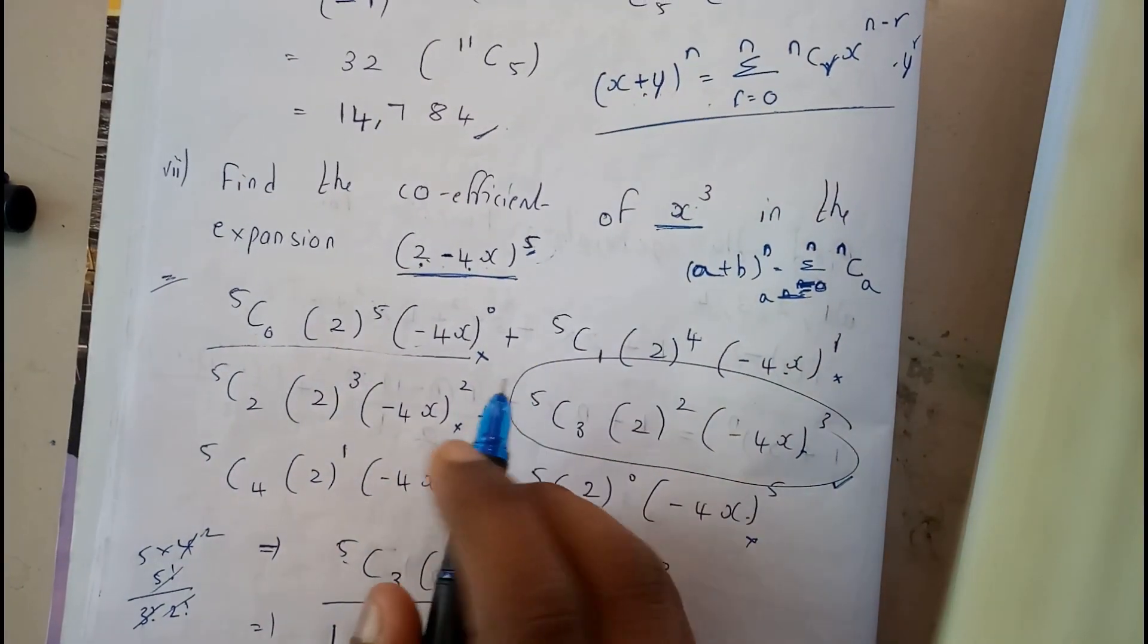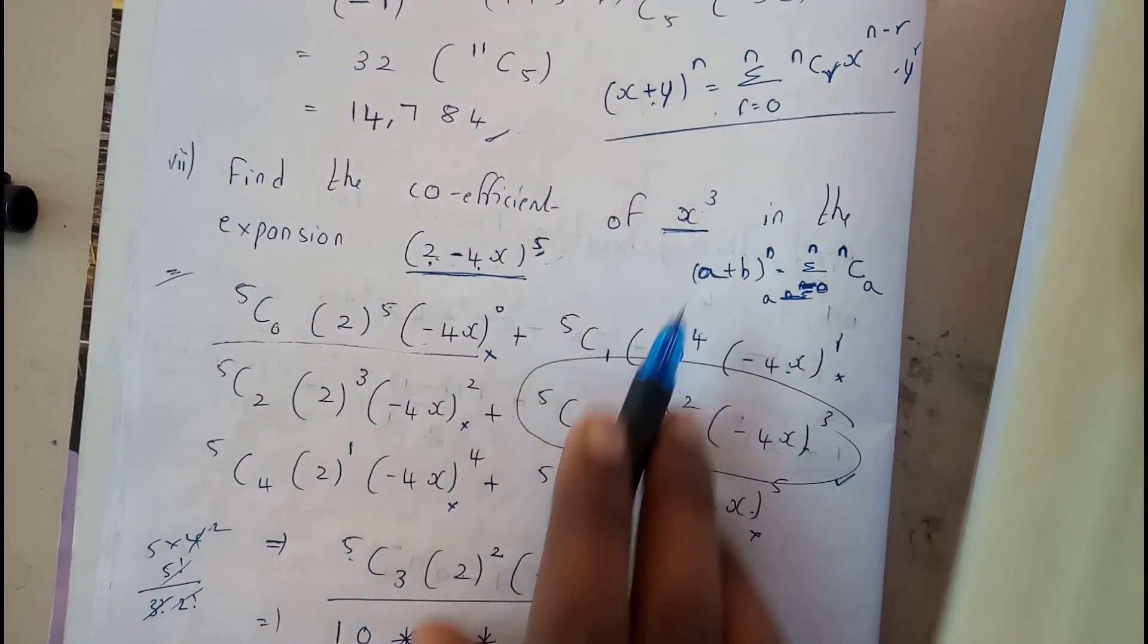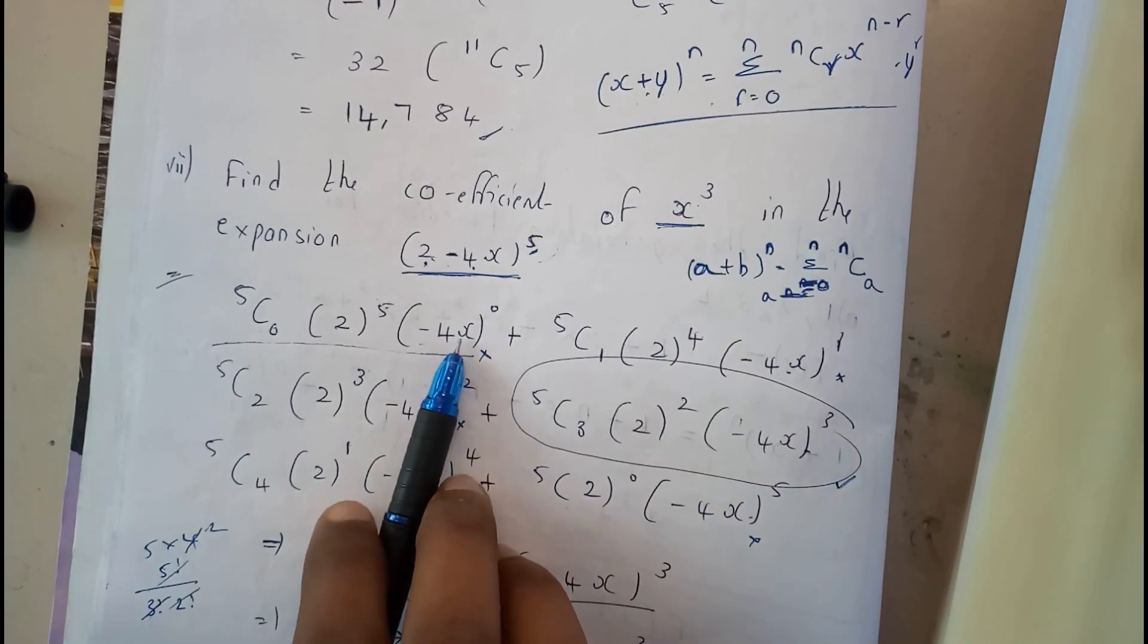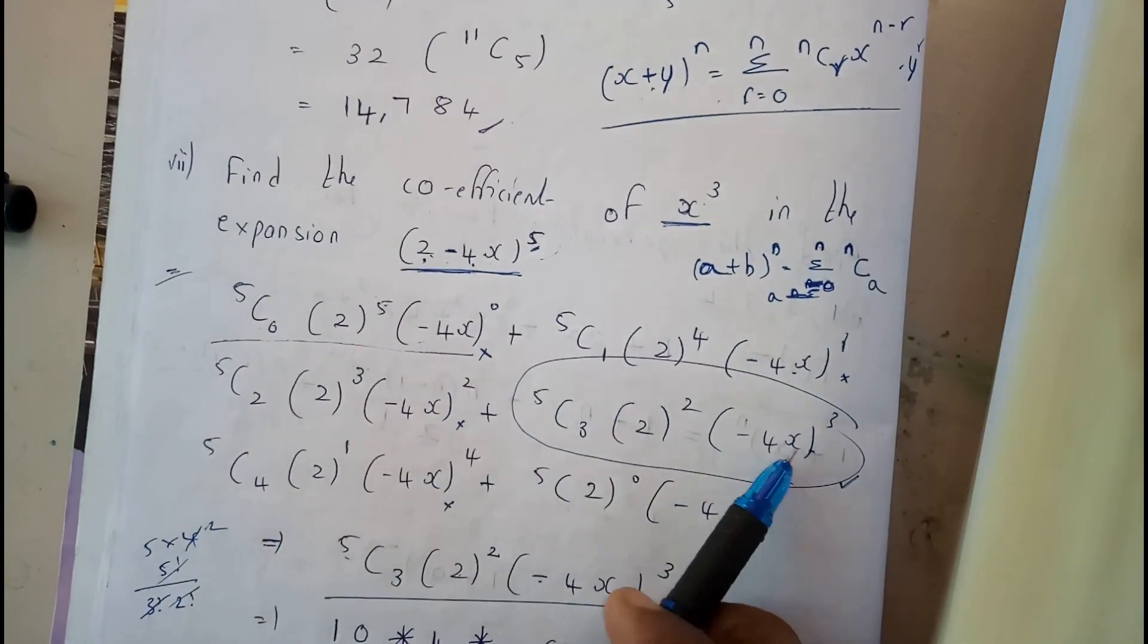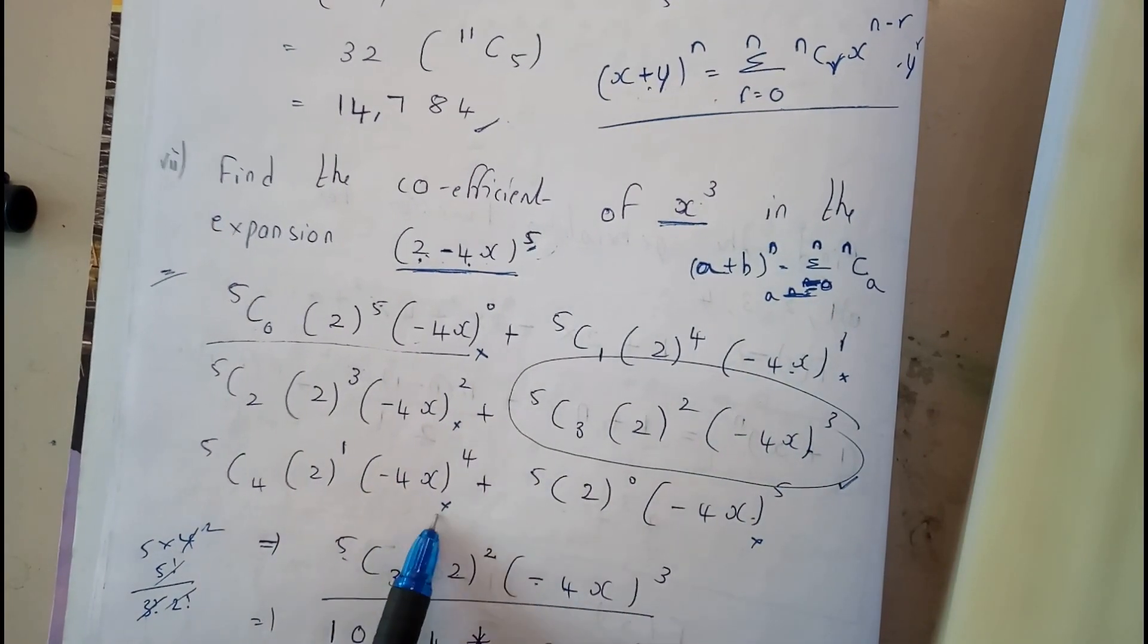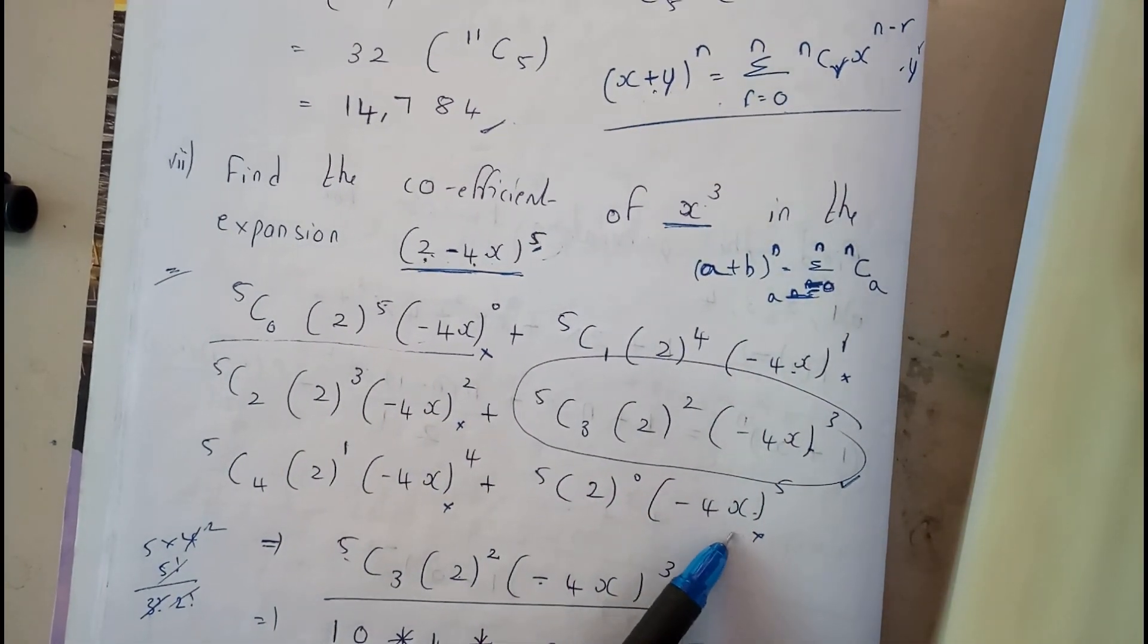So now, I will be searching for the coefficient x power 3. Here there is a chance of x power 3? No, here we are having x power 0. Here x power 1, no. x square, no. x cube, yes. x power 4, no. x power 5, no.